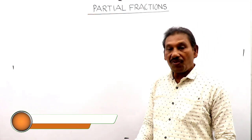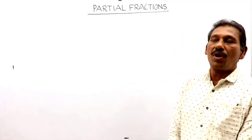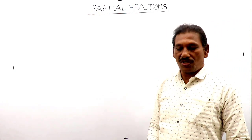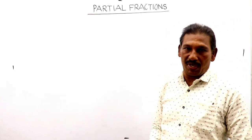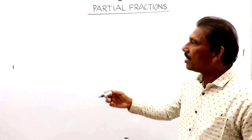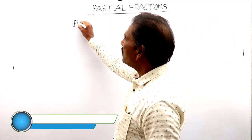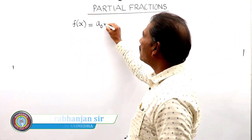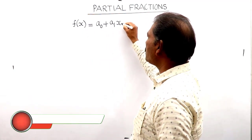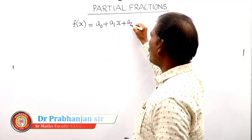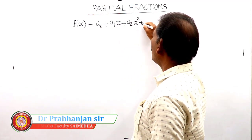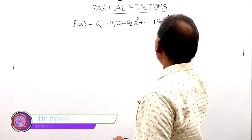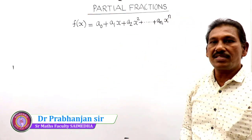First we want to think about what is meant by a fraction, and for that we need to understand what is meant by a polynomial. For example, if f(x) is a polynomial given by a₀ + a₁x + a₂x² and so on up to a₁xⁿ, this expression is considered a polynomial.